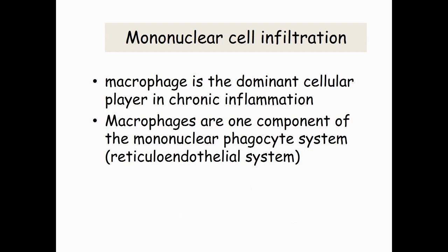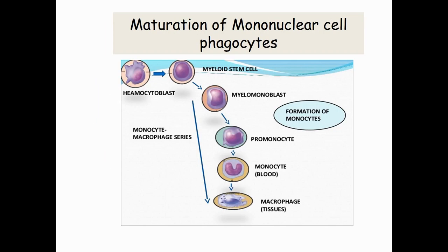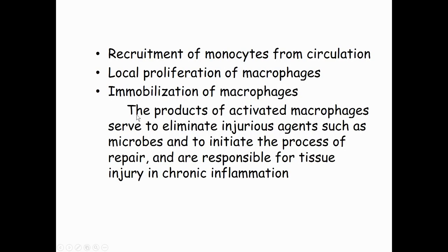Mononuclear cell infiltration. Macrophages are one component of the mononuclear phagocyte system, also known as the reticuloendothelial system. This diagram shows the maturation of mononuclear cells. First, they recruit monocytes from circulation, and then later they can proliferate, causing the immobilization of the macrophages. The products of activated macrophages serve to eliminate injurious agents.